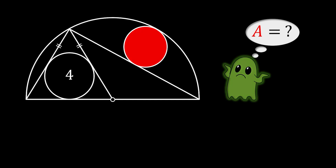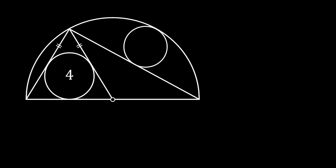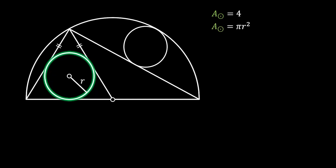Alright, so let's solve this one together. For this problem, we are going to use several different properties of a circle and the circular theorems. Let's first start with our inscribed circle inside the triangle. This circle has the area of 4 squared units. If we label the radius of this circle as small r, we can say that the area equals π r², so π r² = 4. This is going to be super useful for us later.